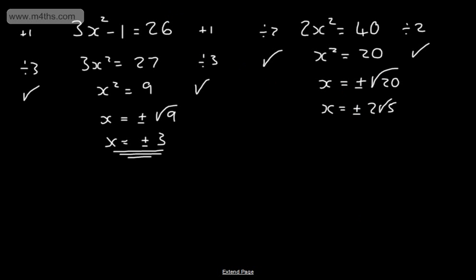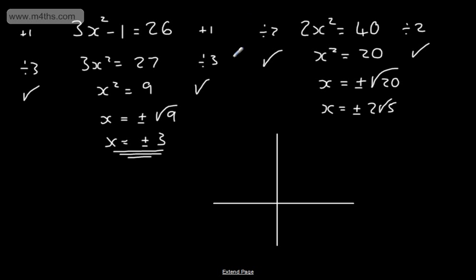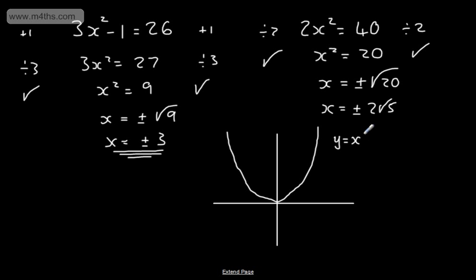If you're still not 100% happy with the idea of a plus or minus answer, we can draw the graph of y equals x squared. The graph of y equals x squared looks something like this — we call it a parabola. It's symmetric about the y-axis.